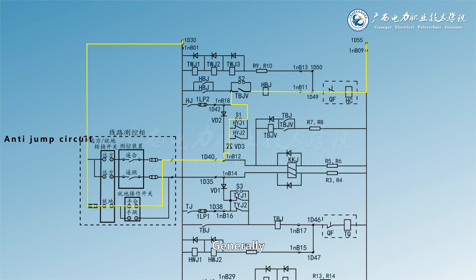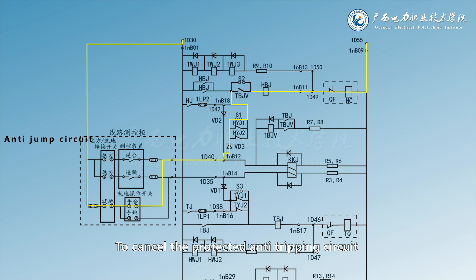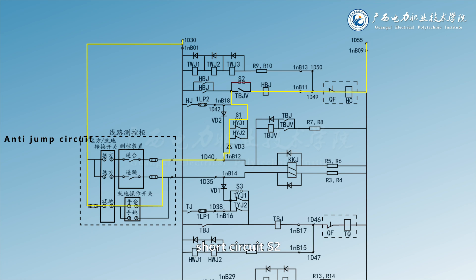Generally, the circuit breaker operating mechanism has its own anti-tripping circuit, while only one set of anti-tripping circuit can be used at a time. To cancel the protection's anti-tripping circuit and use the anti-tripping circuit of the circuit breaker itself, short circuit S2.